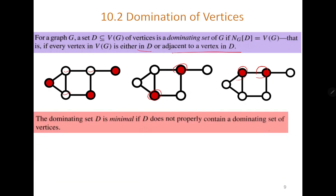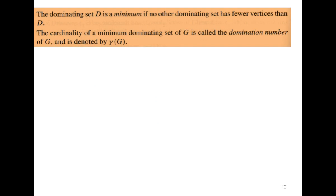The complete vertex set itself is always a dominating set, so we look for the minimum dominating set. Minimal means it does not contain a proper subset that is also a dominating set. The minimum dominating set gives us the domination number, denoted γ(G).